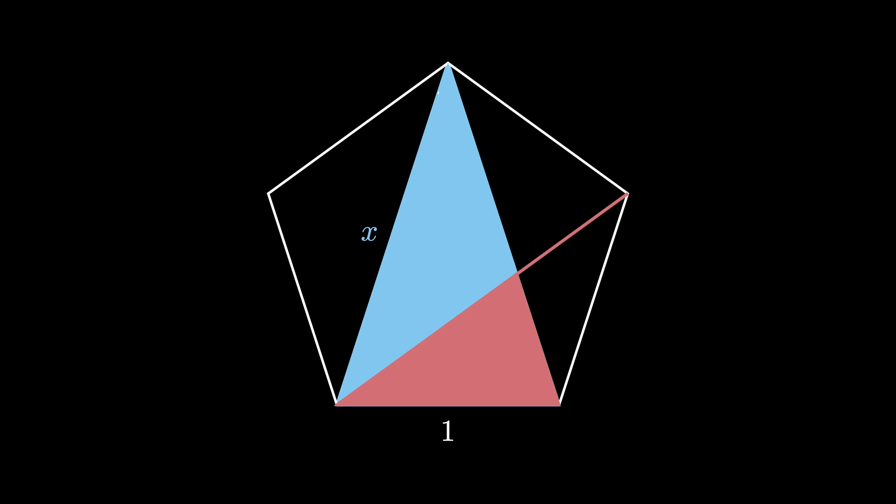Now if we consider the three pictured angles where the top one's labeled alpha, and we draw the circumscribed circle, we see that alpha is subtended by an arc, and so are the other two pictured angles with question marks. But all three of those arcs are exactly one fifth of the entire circle, and therefore each of the angles must be alpha.